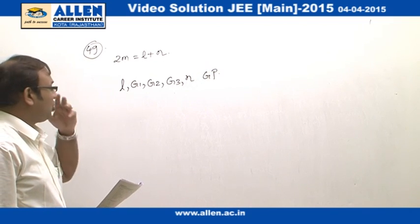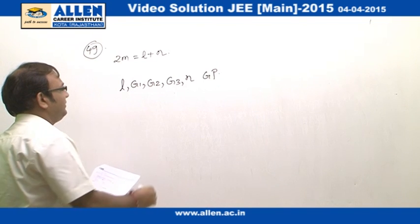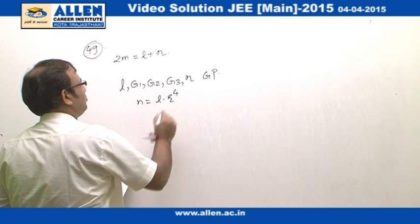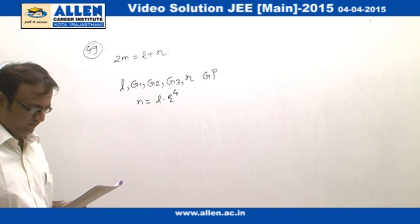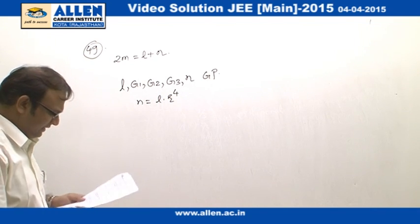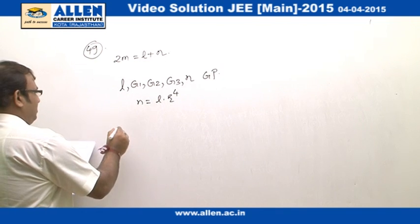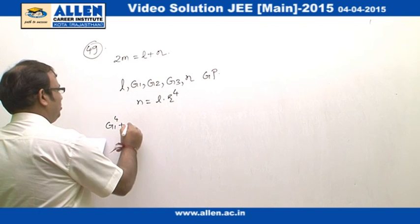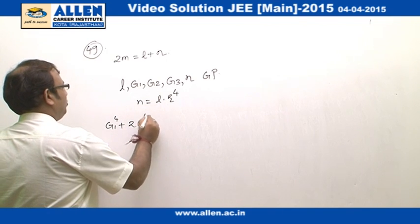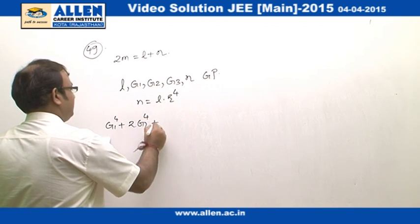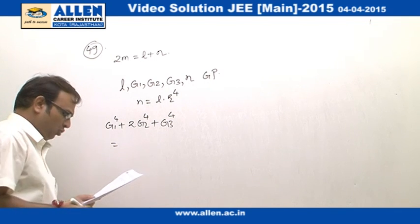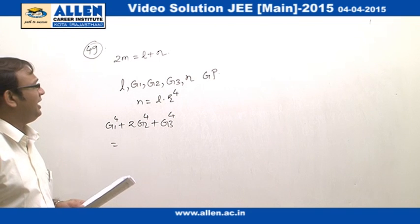If we want to find the common ratio of this GP, we can say that N is equal to L into R power 4. So we have got the value of R power 4. And finally, what they are asking us is the value of the expression G1 power 4 plus 2 times G2 power 4 plus G3 power 4. And this value, we have to report purely in terms of L, M and N.